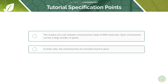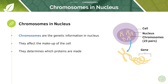So first let's take a look at what chromosomes actually are. The nucleus contains genetic information and this genetic information is stored in our chromosomes. This affects the makeup of the cell and ultimately it determines which proteins are made. Proteins are so important in the body because they form structural elements, enzymes, and hormones.